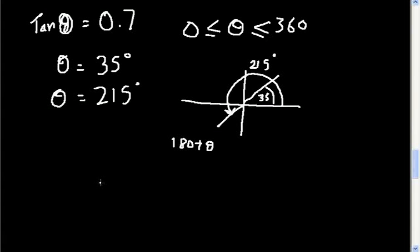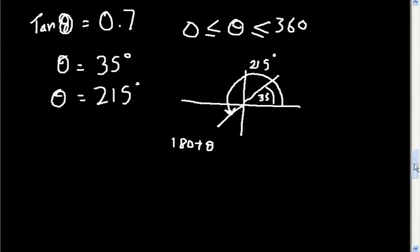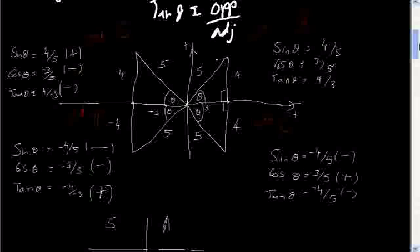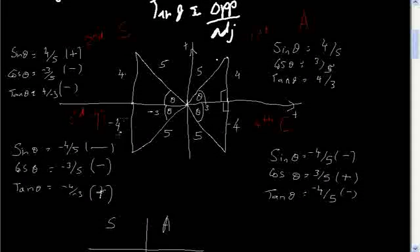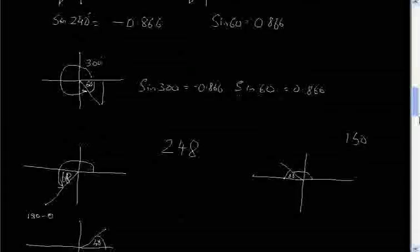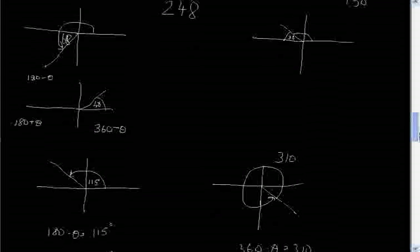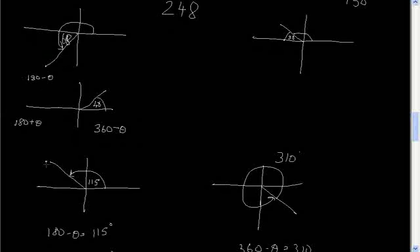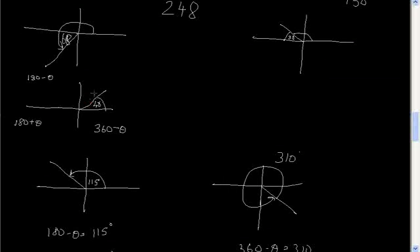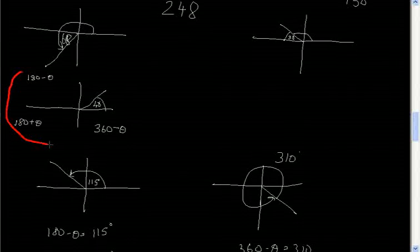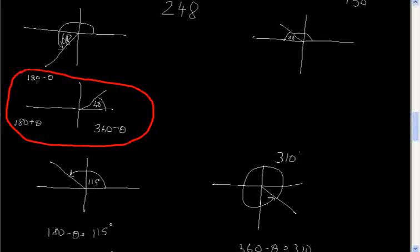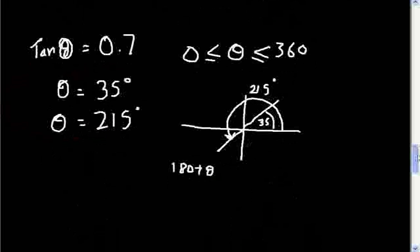Let me do a quick recap. We first figured out why certain trig functions are positive in certain quadrants and negative in others. We also figured out how to work out equivalent angles when given the acute angle. For the second quadrant, do 180 minus theta; for the third quadrant, do 180 plus theta; and for the fourth quadrant, do 360 minus theta.